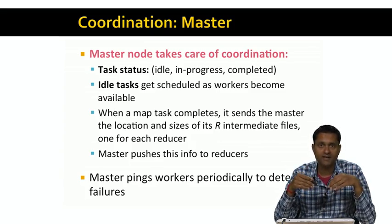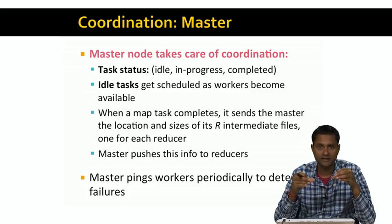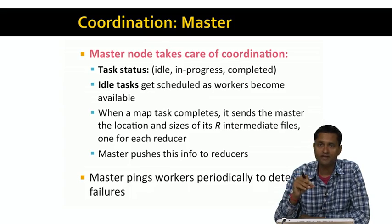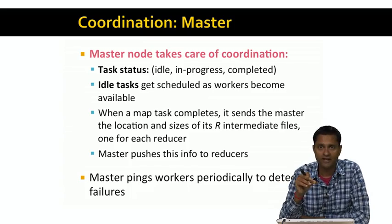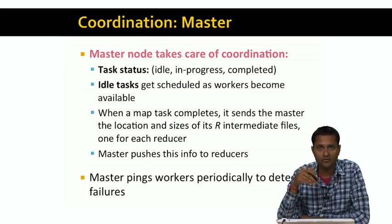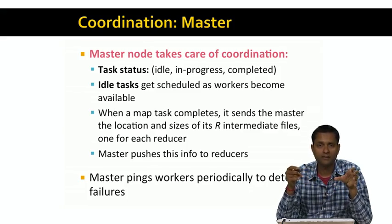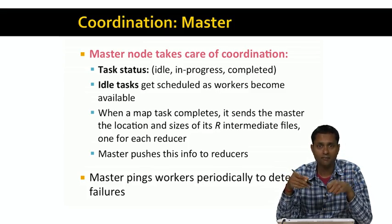When a Map task completes, it sends the master the location and sizes of its r intermediate files. There is one intermediate file created for each reducer, because the output of the mapper has to be shipped to each of the reducers depending on the key value. So when a map task completes, it stores the r intermediate files on its local file system and lets the master know what the names of those files are. The master pushes this information to the reducers. Once the reducers know that all the map tasks are completed, they copy the intermediate files from each of the map tasks and then proceed with their work.